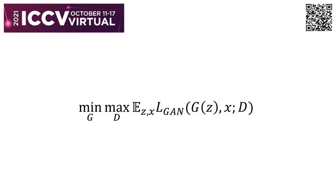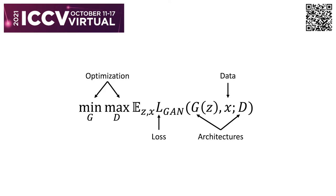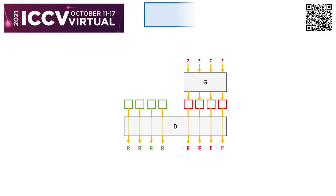As we know, GAN training includes four major components: data, loss, architectures, and optimization. In this work, in order to make improvements for its performance, we retouch two of them: the loss and the architectures.